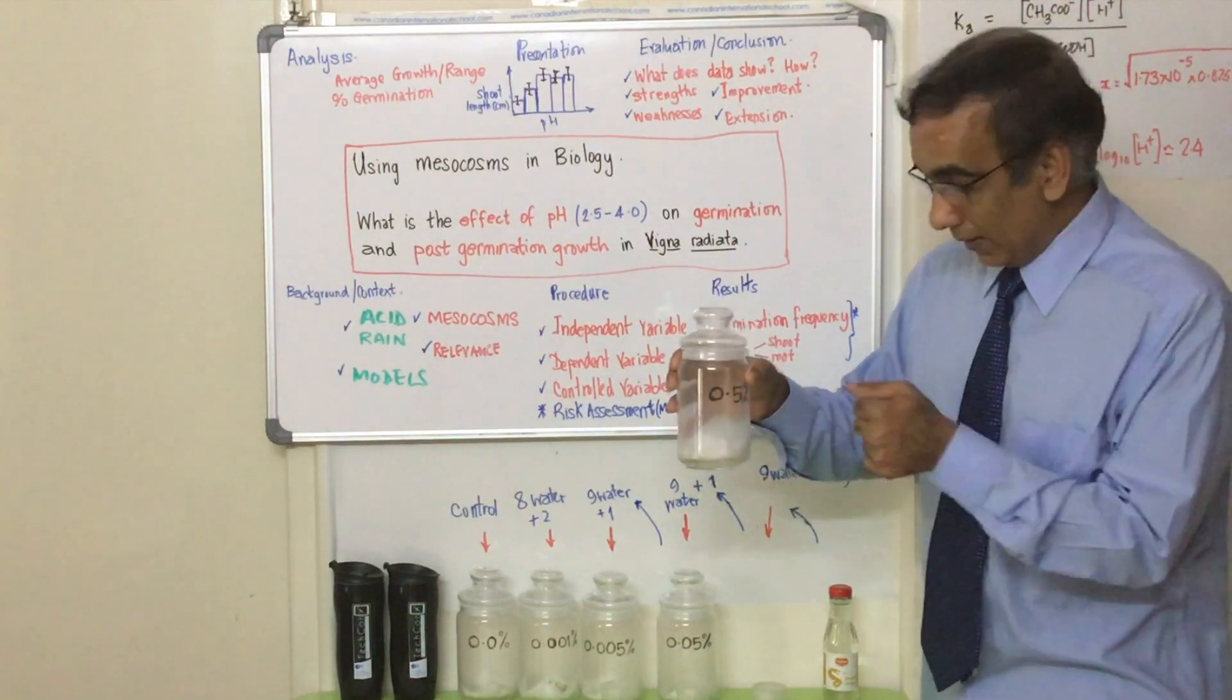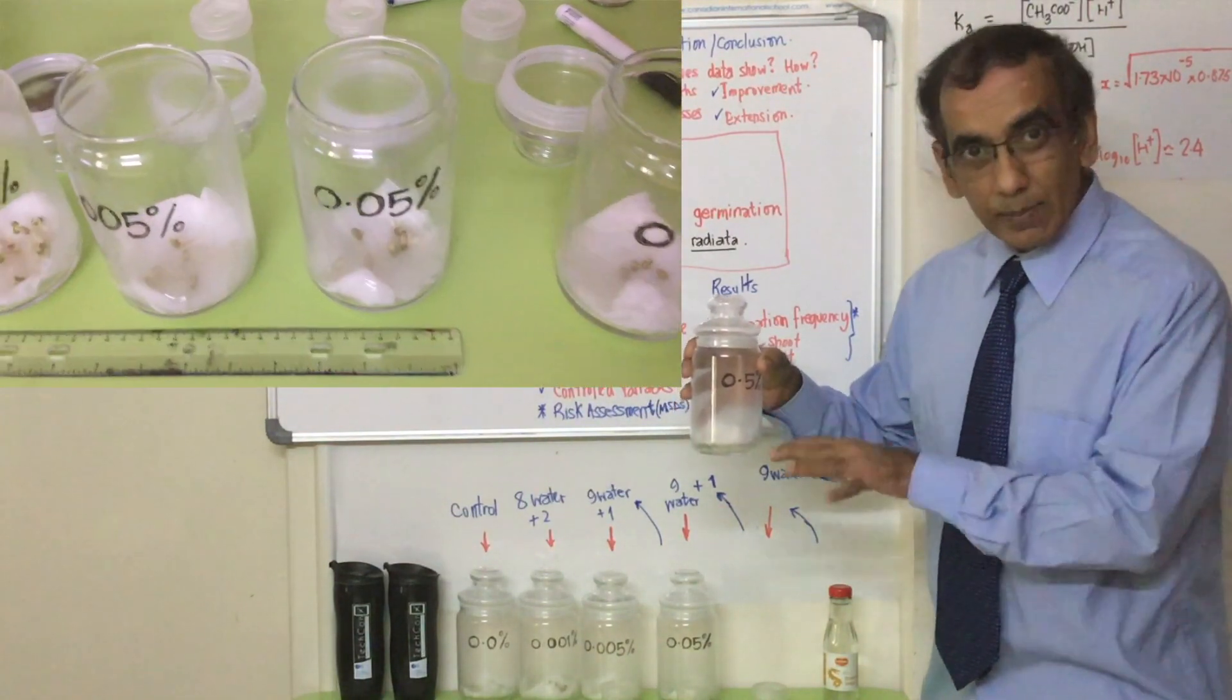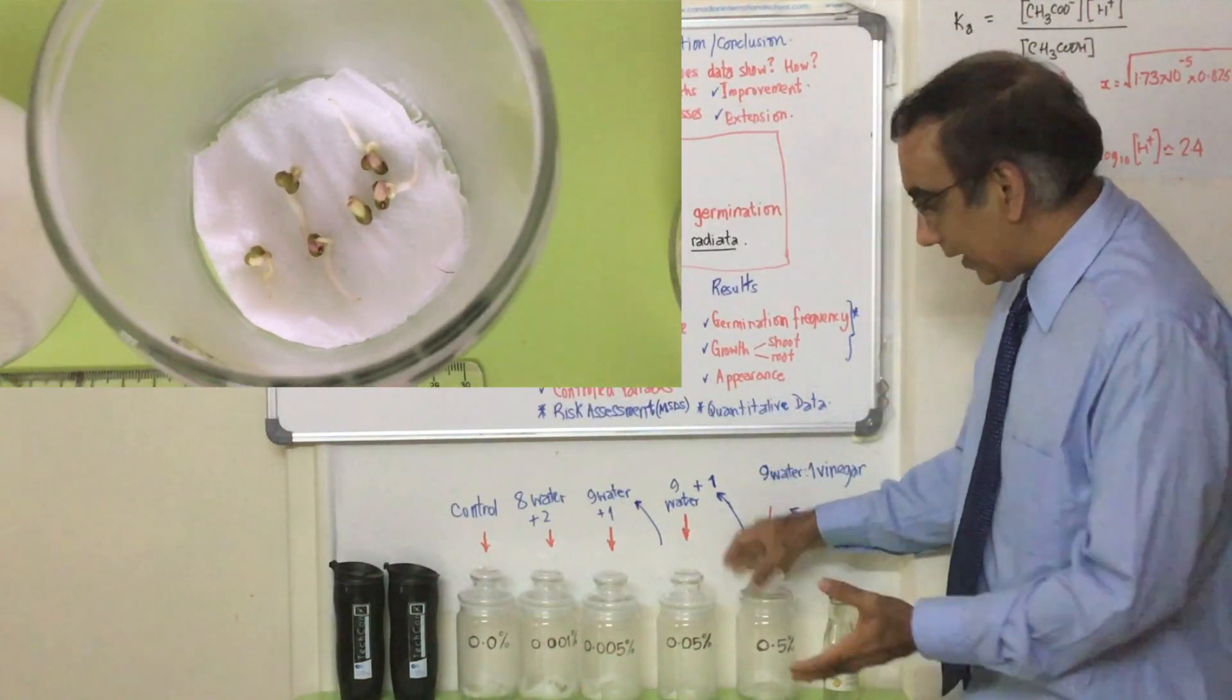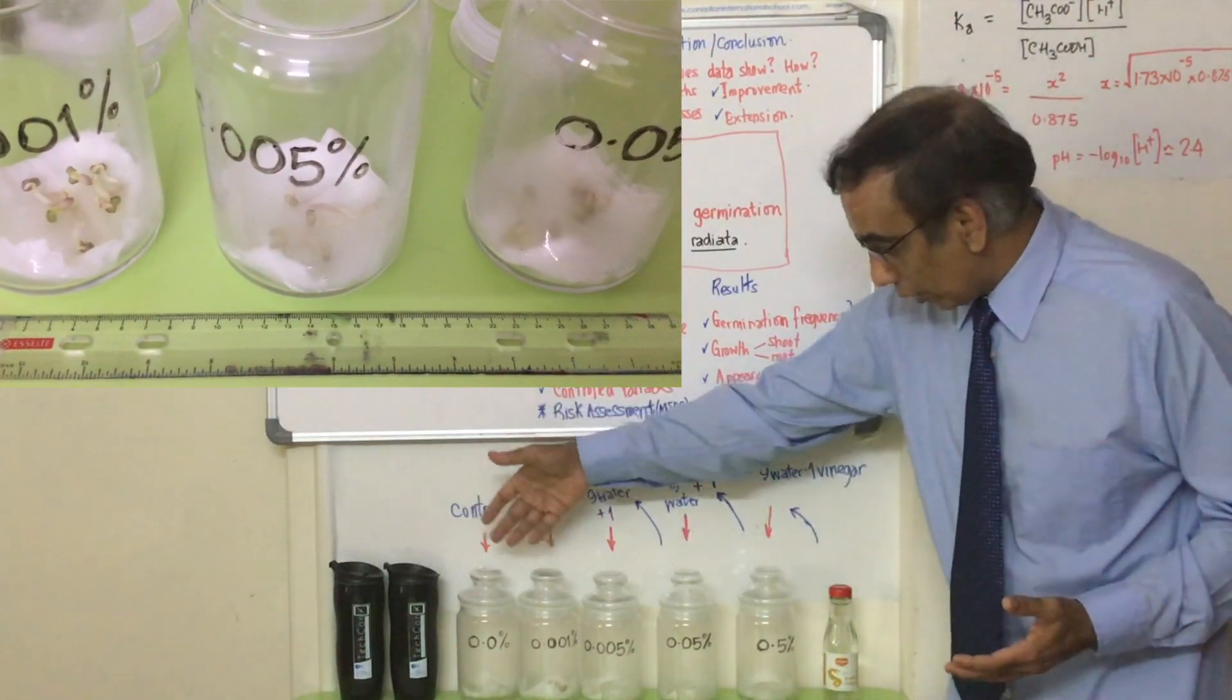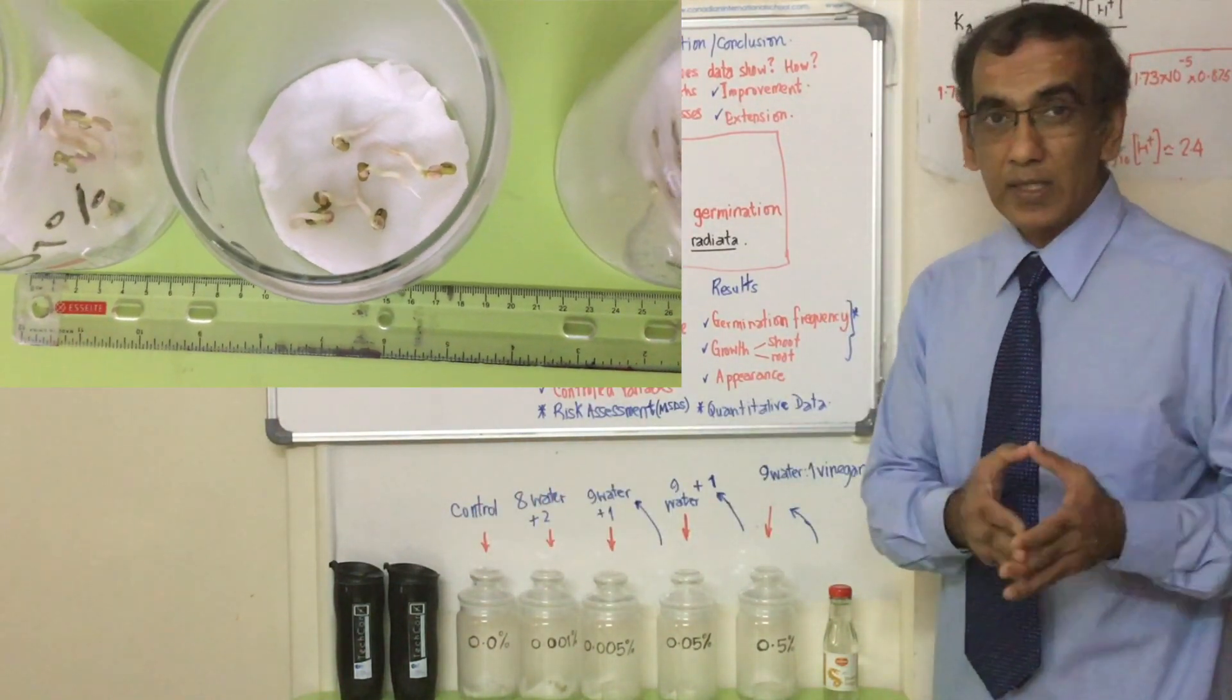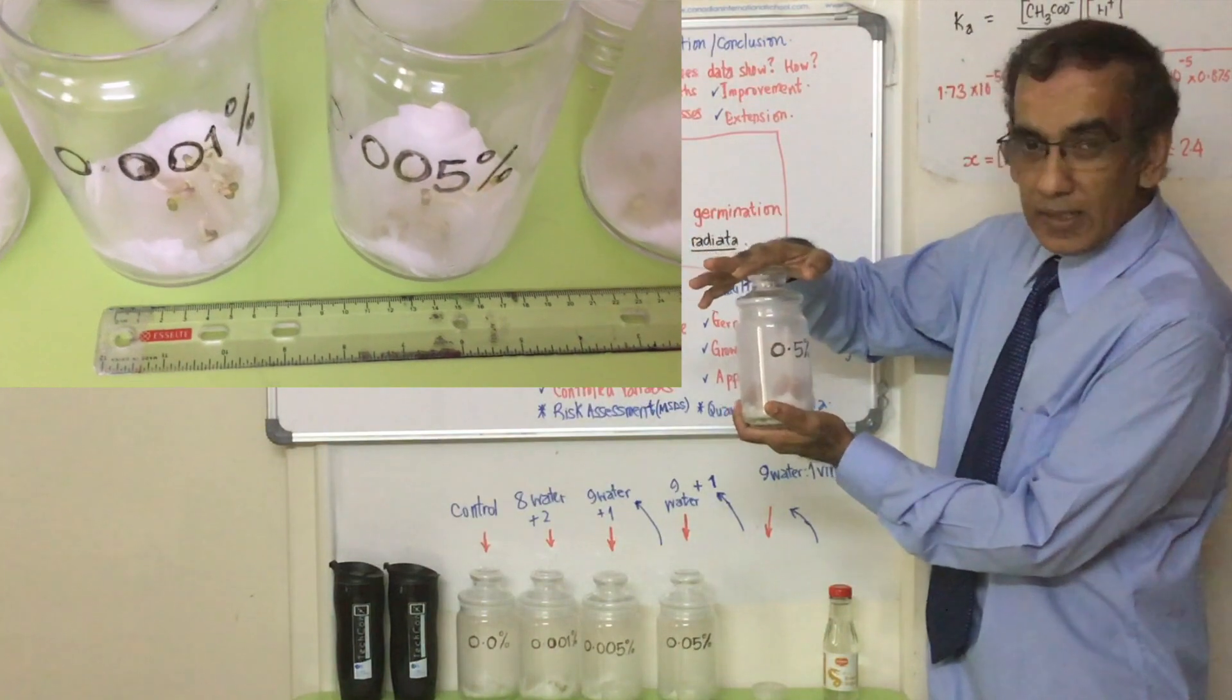All of those are controlled variables. The size of the towel, the amount of liquid, how you place the seed, the number of seeds that you put in, the distance apart between each of the seeds - all of those you aim to control. Of course, there's some obvious ones: they're all kept in the same room here at the same temperature. The amount of oxygen available to all of them would be the same because the container is the same size. Oxygen is an important requirement for successful seed germination.